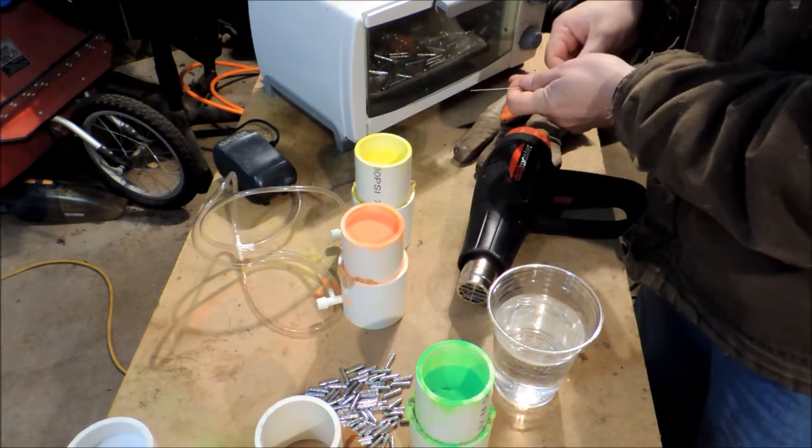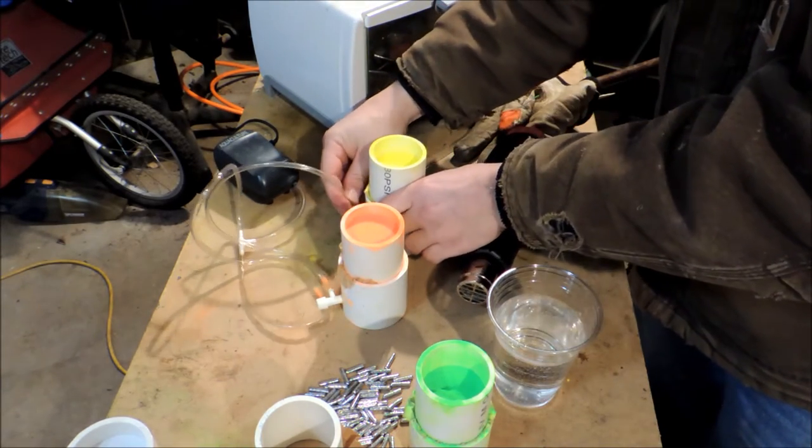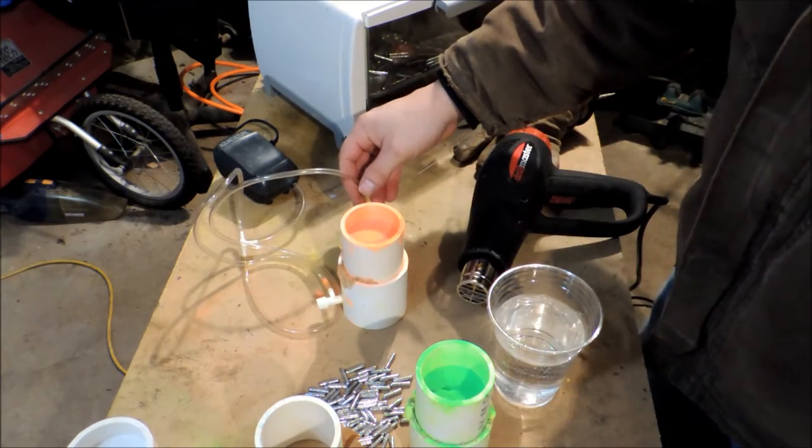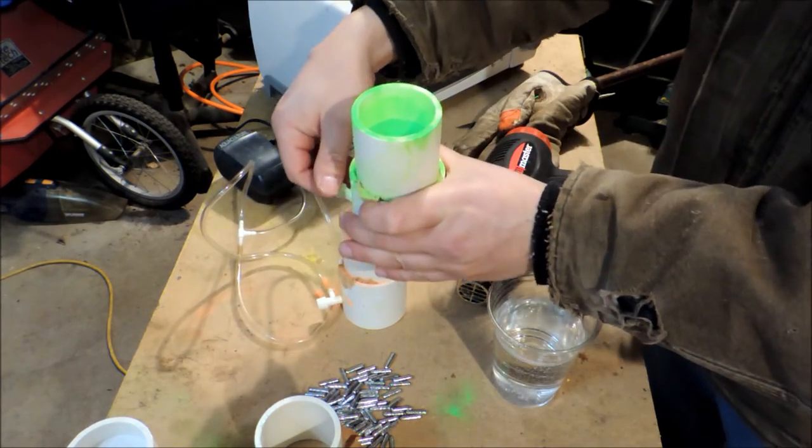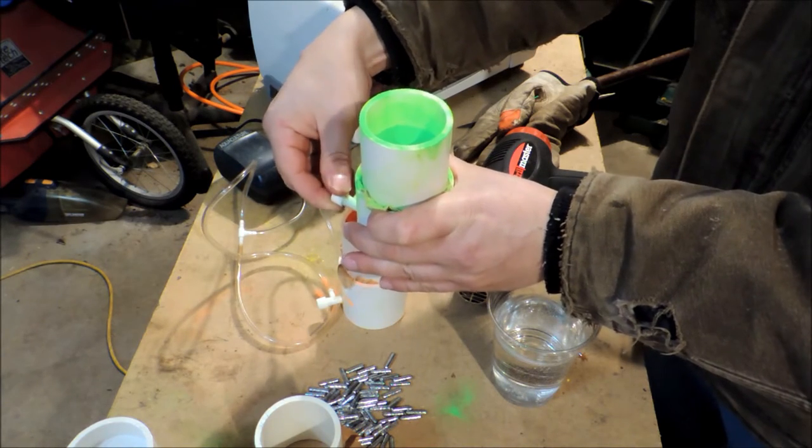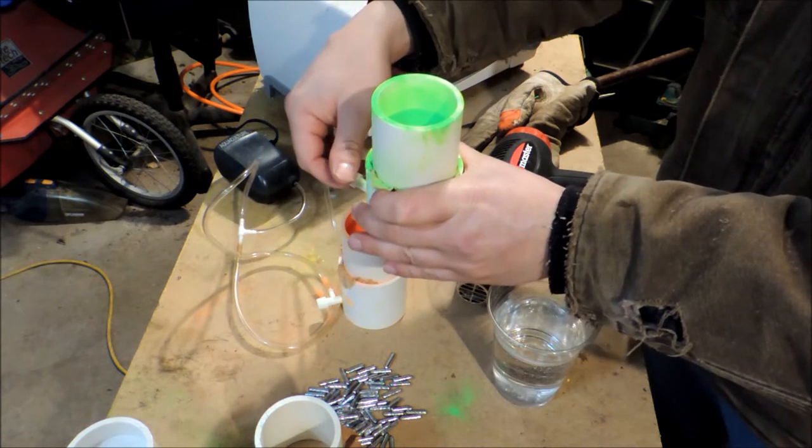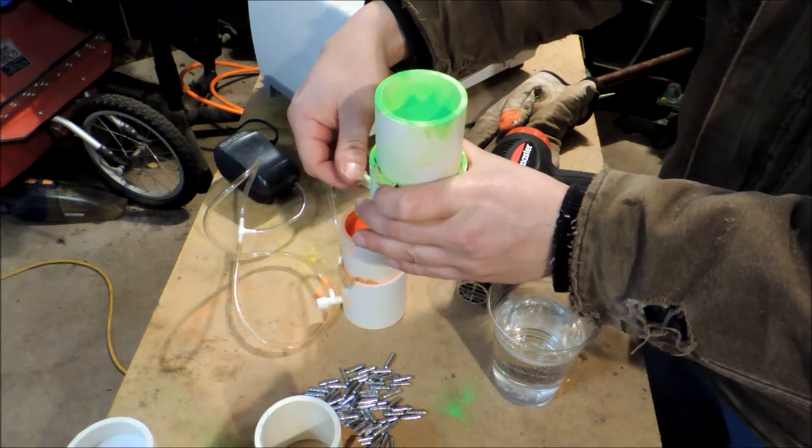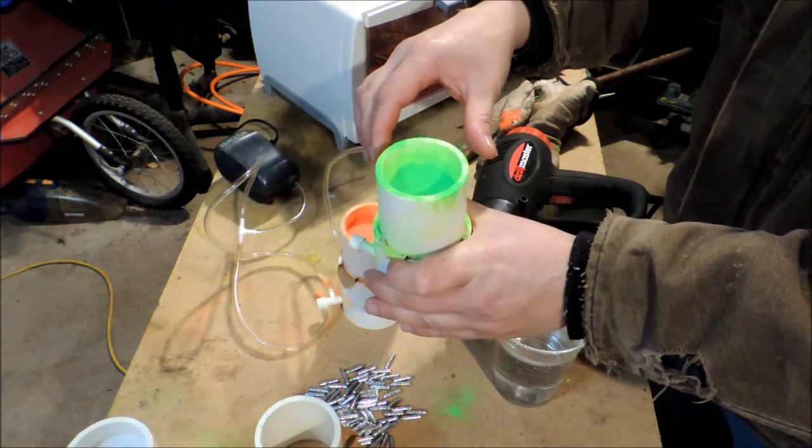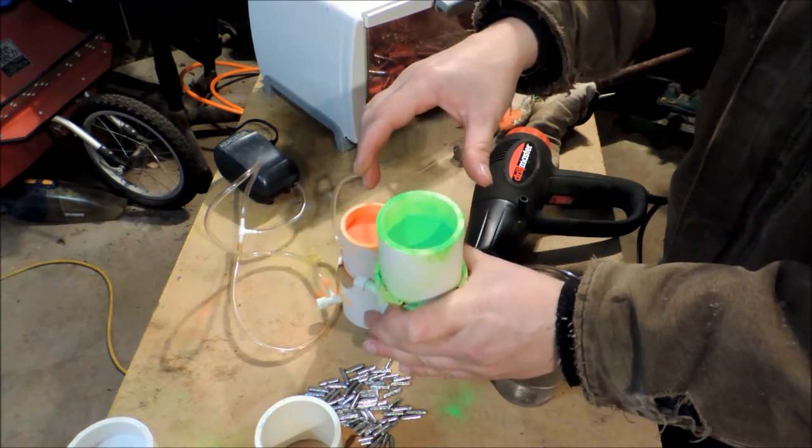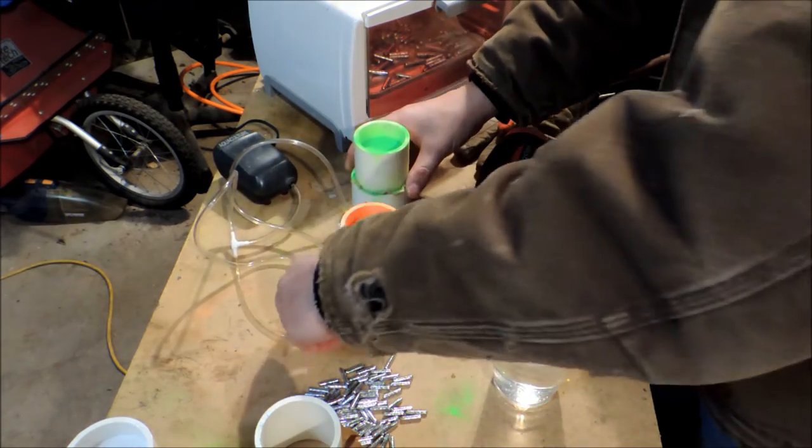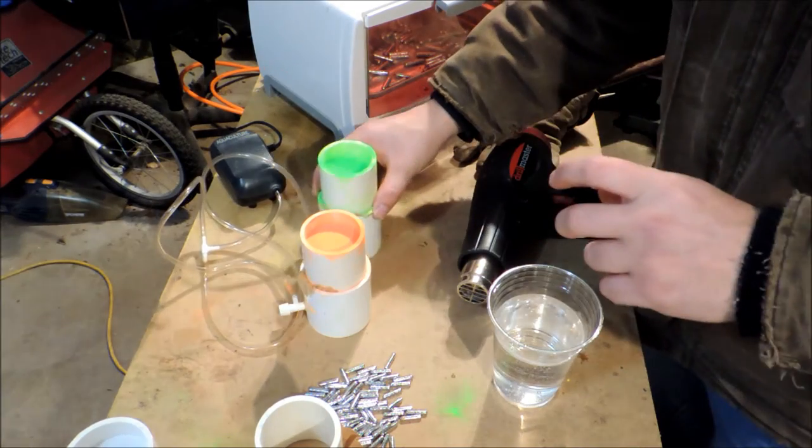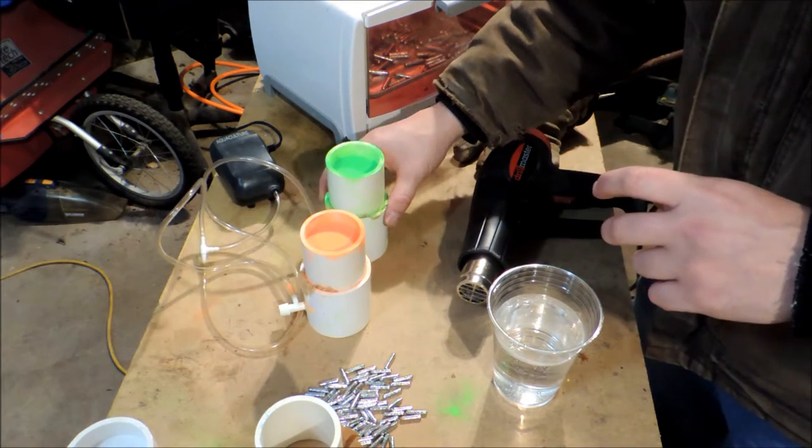So if I want to change colors it's as easy as pulling this off, moving this yellow one out of the way. There it goes it's starting to bubble. And different colors have different weights to them. White is real hard to get to float good.